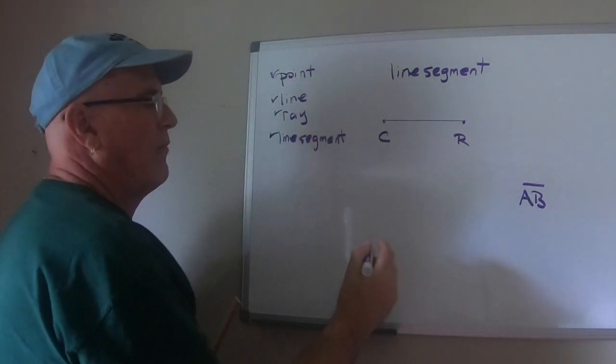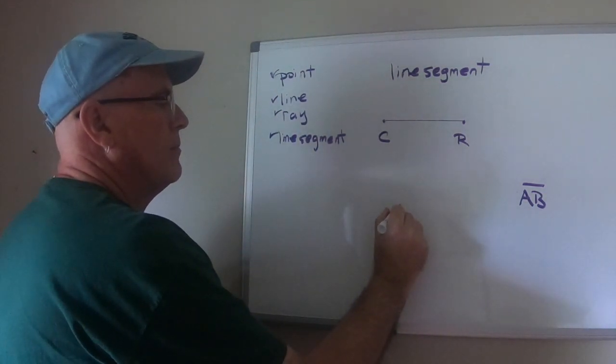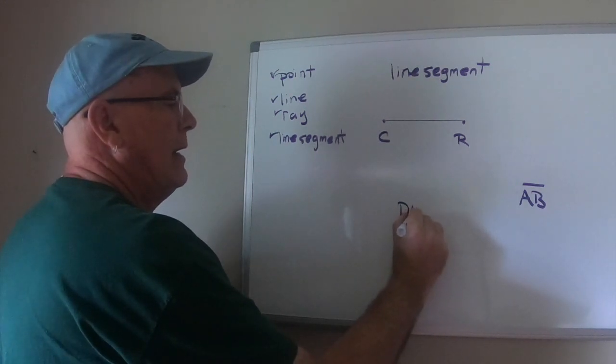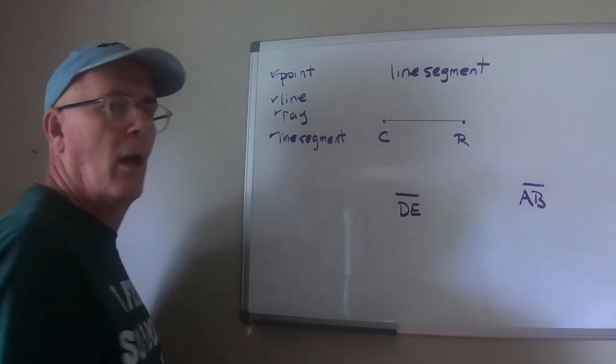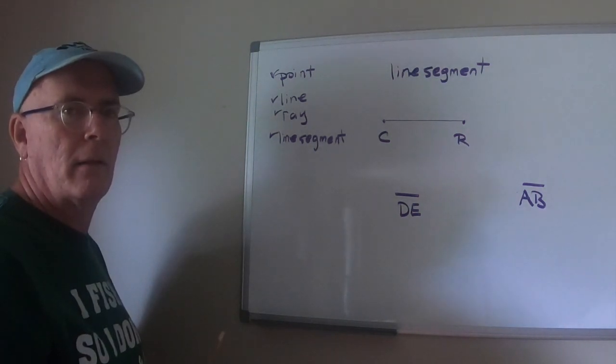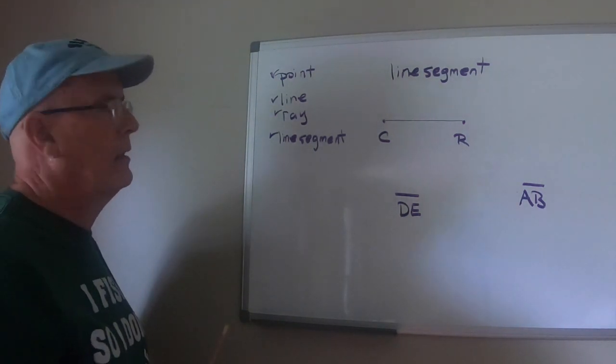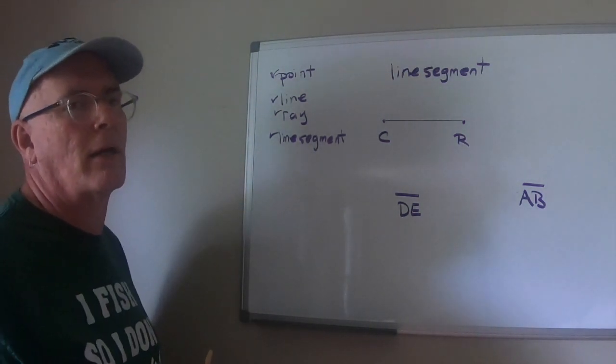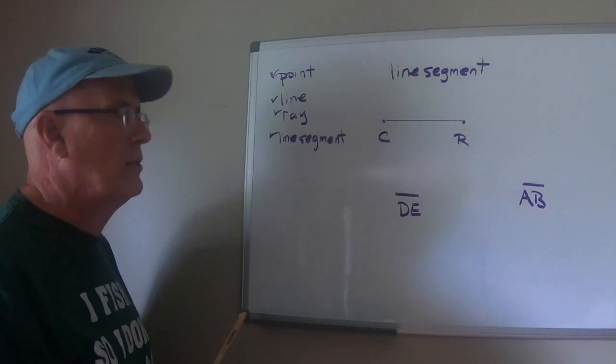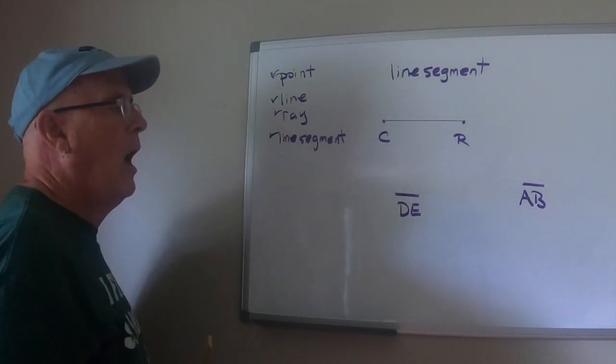So, if I write D, E and put this symbol over it, what does that mean? Correct. Line segment. I'm assuming you got it correct. This is a one-way teaching lesson, so how would I know if you got it correct?